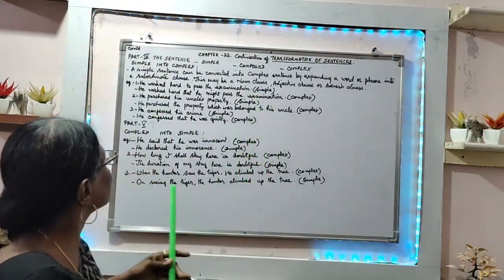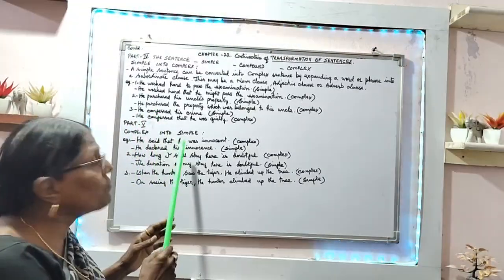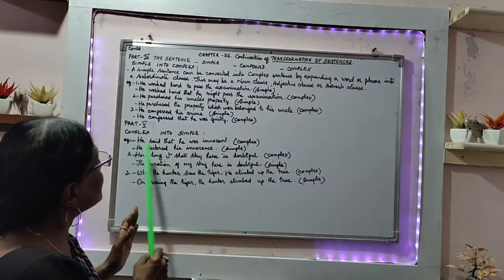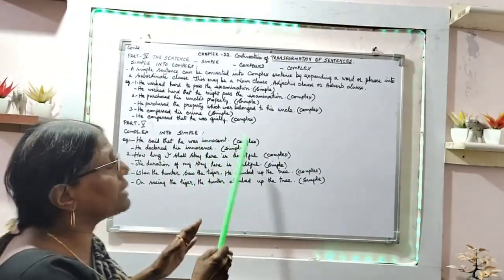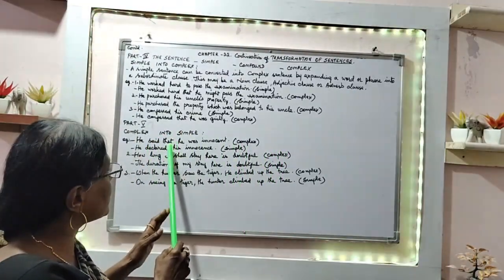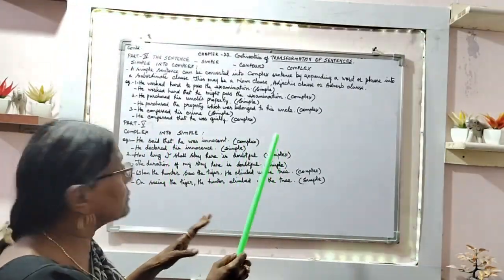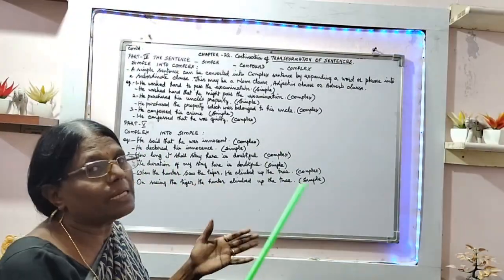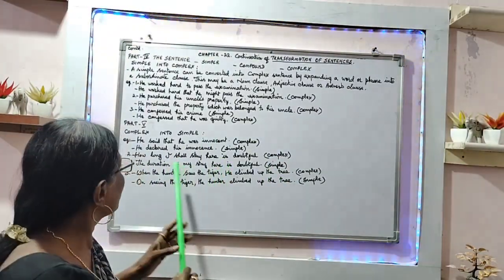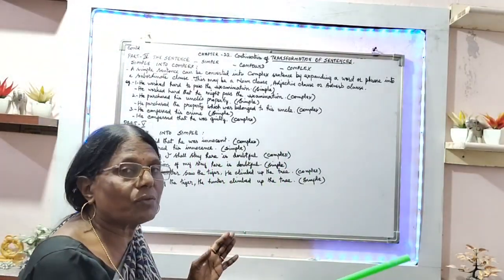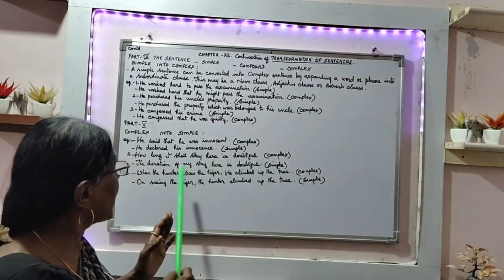Next, Part 5: complex sentence to simple sentence. Example: 'He said that he was innocent' is a complex sentence. 'He declared his innocence' is the simple sentence.